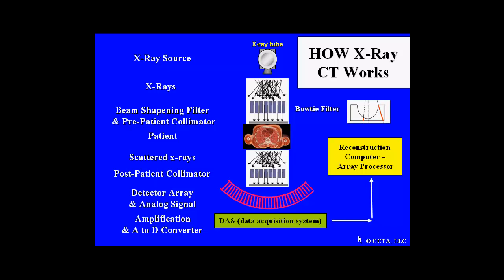Once the x-rays leave the patient, they are also scattered and are sent through a post-patient collimator, which also determines individual slice thickness. This information is then incident upon a detector array, which produces an analog signal from the photon energy. This information is then amplified and sent from analog to a digital converter called the data acquisition system or DAS. Once this digital information is available, the data are then sent to a reconstruction computer called an array processor.